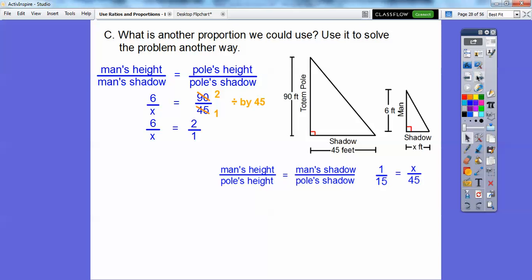All right, so now we can go ahead and set up that proportion and then cross multiply, okay? So 2 times x equals 6 times 1. So 2x equals 6. So divide by 2 and you get x equals 3 feet. So the man's shadow is still 3 feet long, okay?